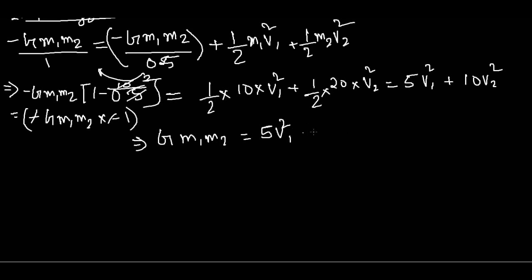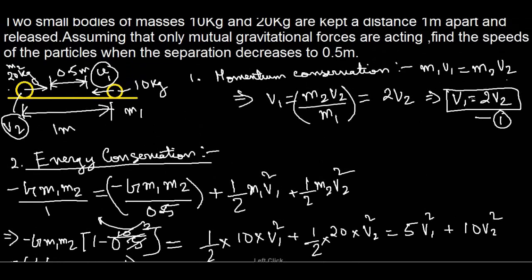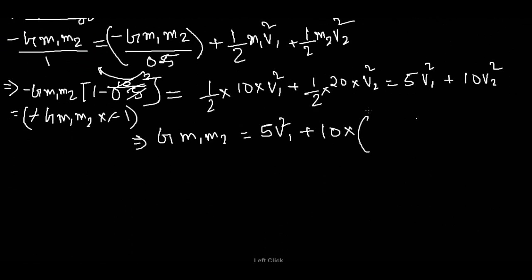Now I can write minus minus will be cancelled. G M1 M2 equals 5 V1 square plus 10 V2 square. Now this is where I will substitute the relation from equation 1 which I got earlier: V1 equals two times V2, so V2 equals V1 by 2. So V1 by 2 whole square. I can write here 5 V1 square plus this will get cancelled, this is basically 4, so this will be 5 by 2 times V1 square.